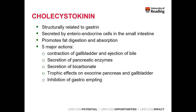Cholecystokinin is structurally very similar to gastrin. It's secreted by enteric endocrine cells in the small intestine and promotes fast digestion and absorption. It has five main activities: it promotes contraction of the gallbladder and ejection of bile into the small intestine; it promotes secretion of pancreatic enzymes in the small intestine; it promotes secretion of bicarbonate in the small intestine; it has a trophic effect on the exocrine pancreas and gallbladder — the exocrine pancreas being involved in secretion of amylases, proteases, and lipases; and it inhibits gastric emptying.